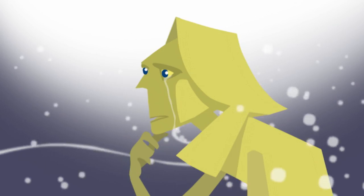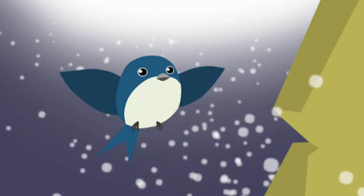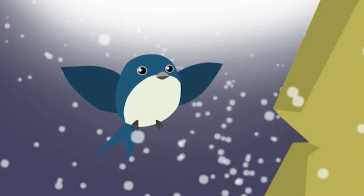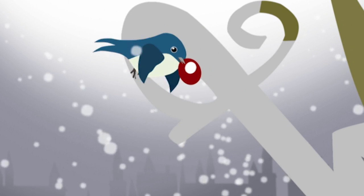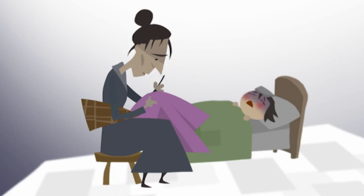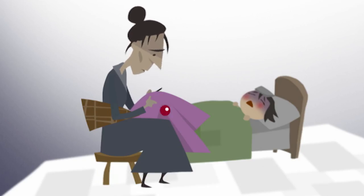Dear swallow, would you pluck the ruby from the hilt of my sword and take it to that woman? Then she can sell it to buy medicine for her son. The swallow agreed. He plucked out the ruby with his beak and carrying it through the woman's open window, he dropped it into her lap.